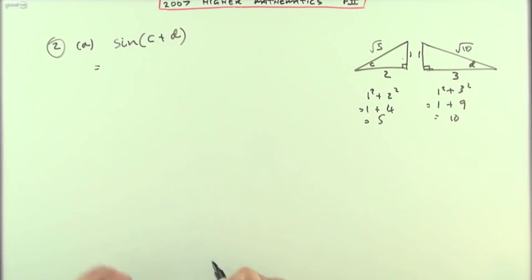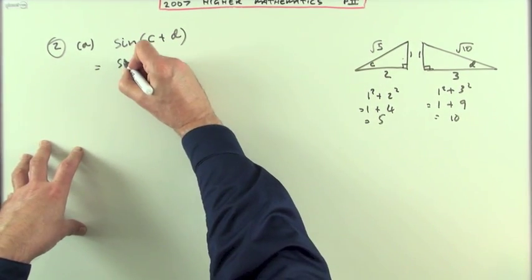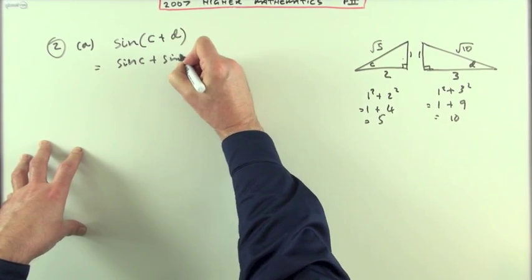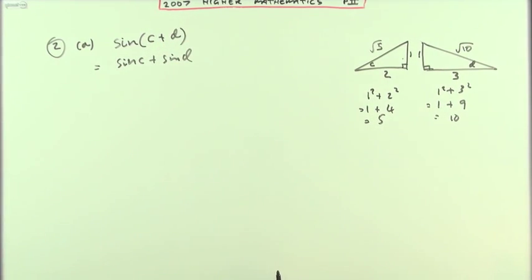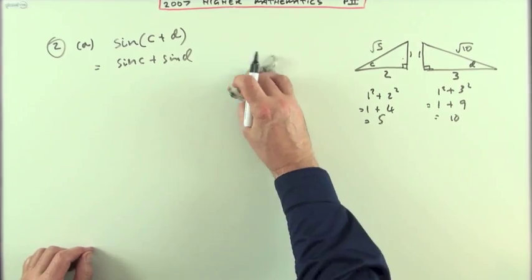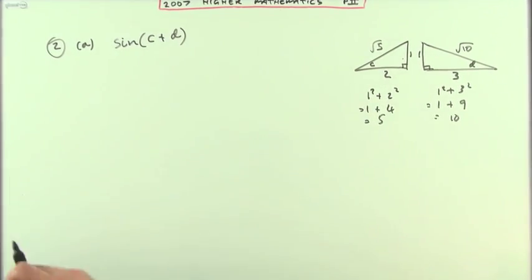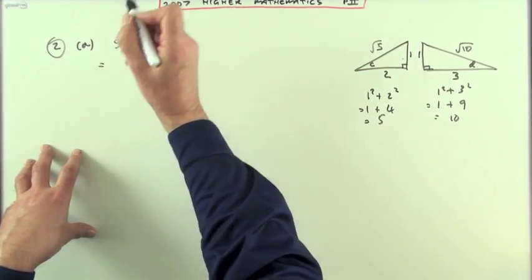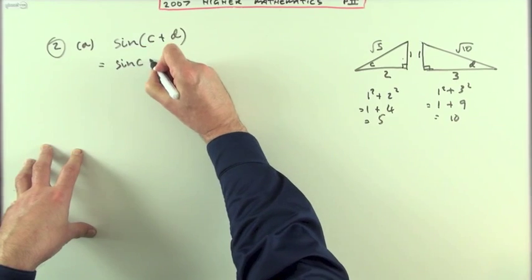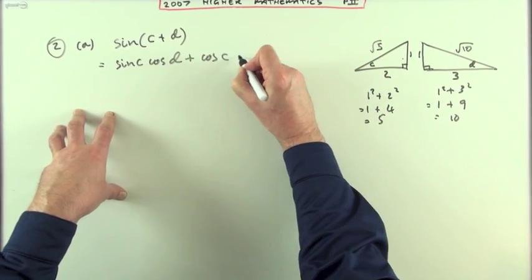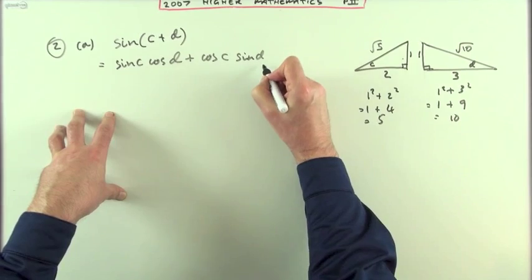And then let's just look up the front for the expansion of sine c plus d. Certainly don't put down sine c plus sine d, because that would be just totally wrong and markless of course. So you look up the front and you've got sine c cos d plus cos c sin d.